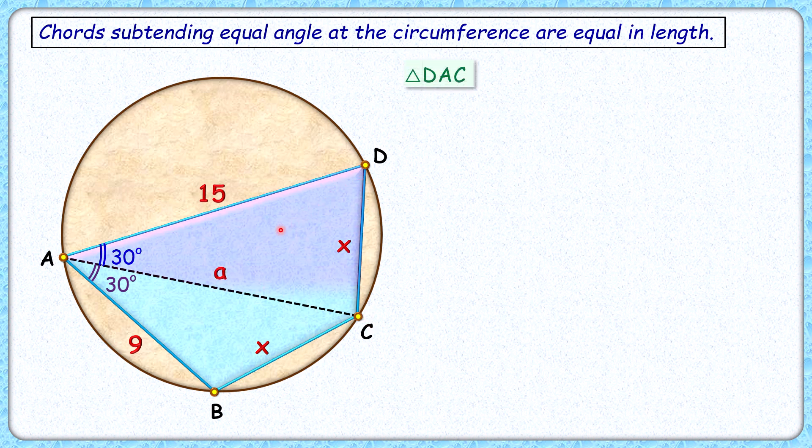The cosine law says that x² will be equal to 15² plus a² minus 2 times 15 times a times cos 30°, where 30° is the angle between these other two sides.